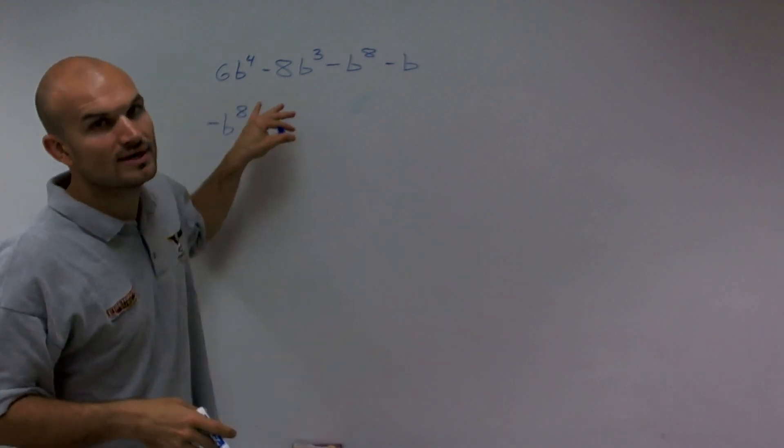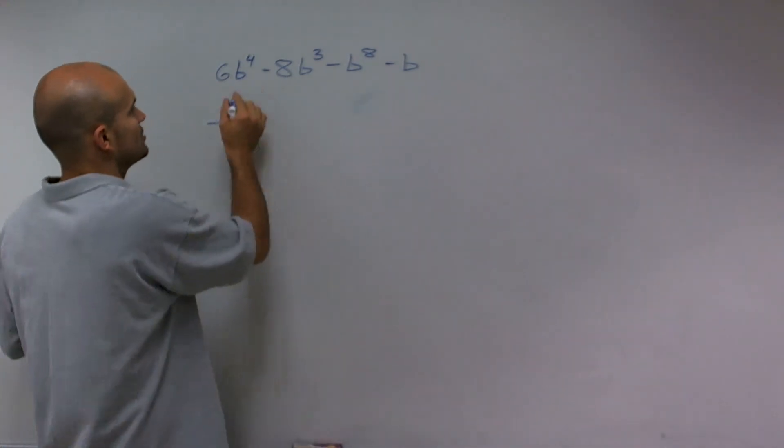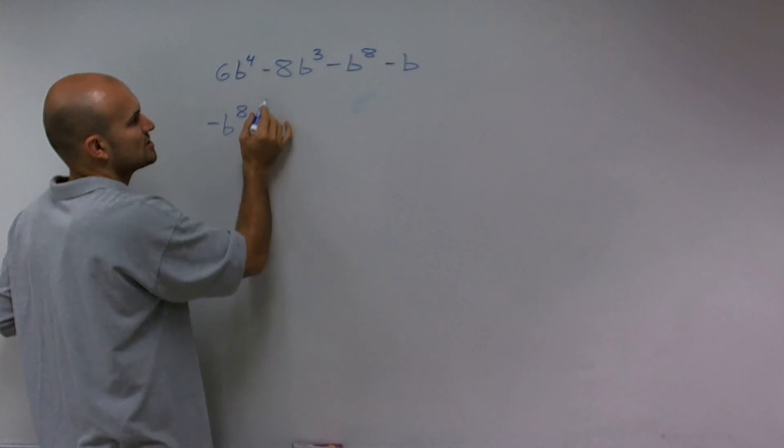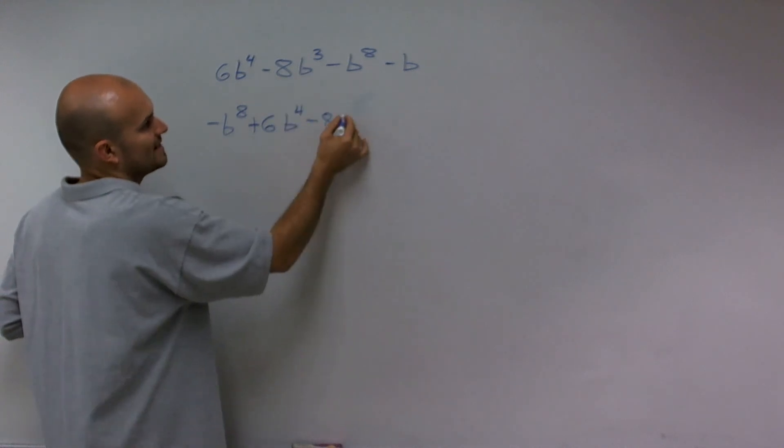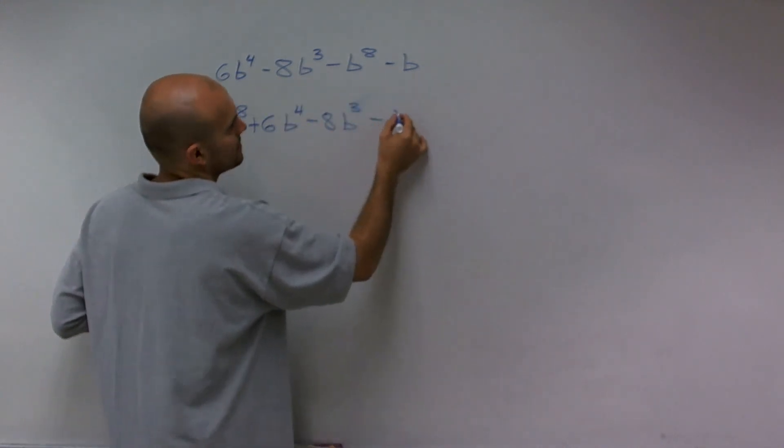Then I'm going to write in descending order. The next term with the largest exponent would be b to the fourth. So that's a positive 6b to the fourth. Then I have negative 8b cubed minus b.